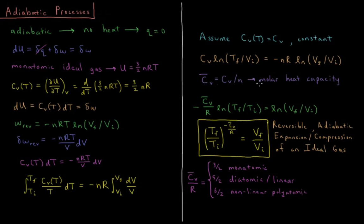We can define the constant volume molar heat capacity, Cv_bar, as the constant volume heat capacity divided by the number of moles — the heat capacity per mole. Dividing out n's and dividing both sides by R gives: negative (Cv_bar / R) times log(T_final / T_initial) equals log(V_final / V_initial). Taking both sides as powers of e to remove the natural logs yields: (T_final / T_initial) raised to the power of negative Cv_bar over R equals V_final over V_initial. This is the relationship between temperature and volume for the reversible adiabatic expansion or compression of an ideal gas.